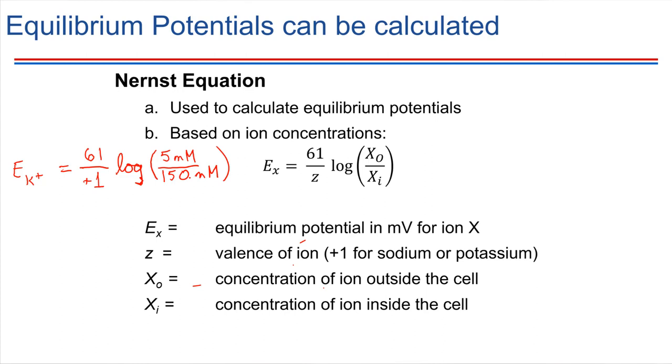At this point, you would need to grab your calculator and plug all of these values in. The units cancel. What we should be doing is taking the number 61 times the log of 5 over 150. With calculators, you might need to be careful with parentheses around the 5 over 150, just to make sure that whole thing is included in the log calculation. Once you've done that, what you should get is a value of minus 90, and standard units for equilibrium potentials are going to be millivolts.